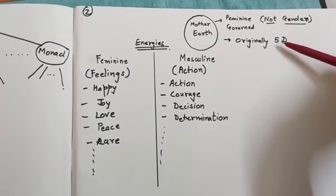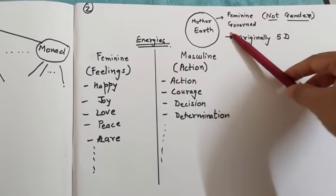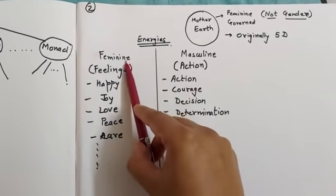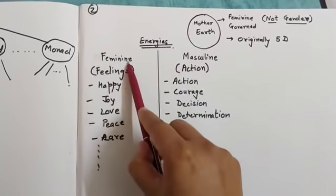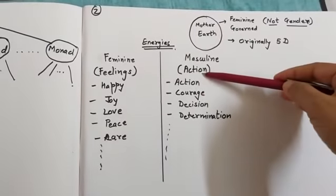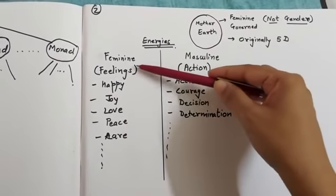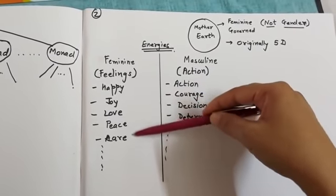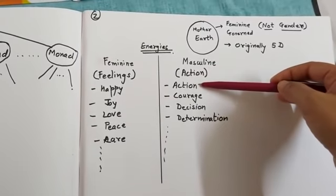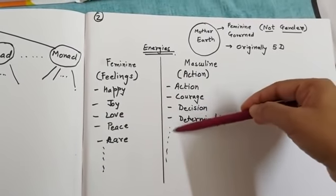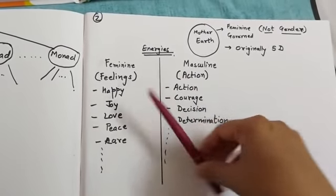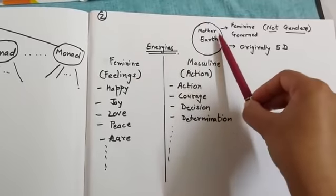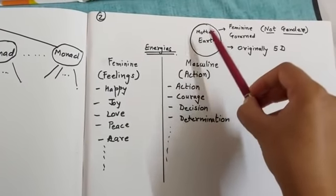I will explain what is feminine governed. Energies are of two types: feminine energies and masculine energies. Feminine stands for feelings and masculine stands for action. Feminine energies are like happy, joy, love, peace, care. Masculine energies are action, courage, decision, determination and many others. So basically feminine governed means it was supposed to be governed by the feelings, that is why it was feminine governed.